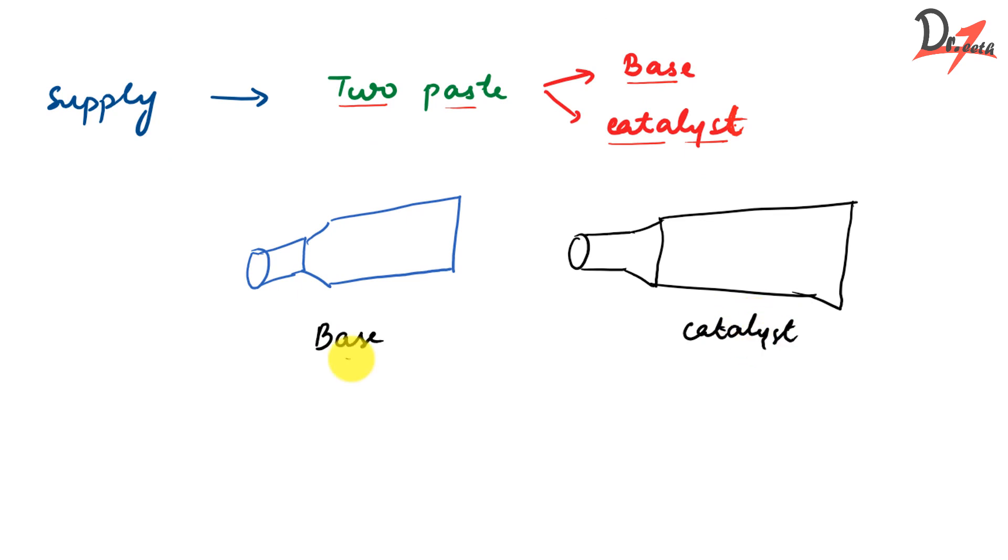Now the base paste is always lighter in color and the catalyst paste is usually brown in color. The base paste consists of zinc oxide eugenol and the catalyst paste contains the accelerators. We'll see the composition in a while and the smell that we get from this zinc oxide eugenol, that is from the catalyst paste. So it is responsible for smell because it has eugenol.